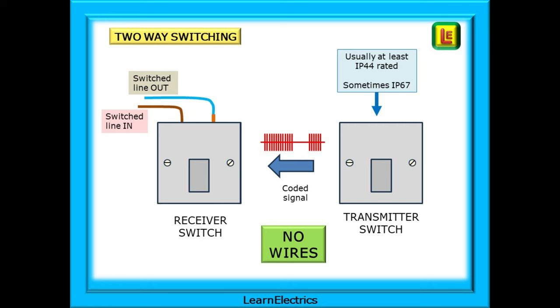For two-way and intermediate switching, no longer do we need to run strapper cables between switches. The first switch has the 230 volt switch wires fed into it and that is where the need for 230 volts stops. The second switch is completely independent and can be located anywhere as it has no 230 volts and needs no wires. The transmitter switches are usually rated at IP44 or better, even IP67, so can be installed in bathroom locations and are available with no screw holes on the front so they can be glued onto tiled wall surfaces without needing to drill through tiles.